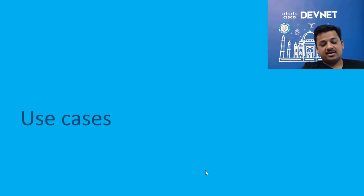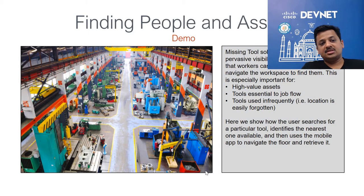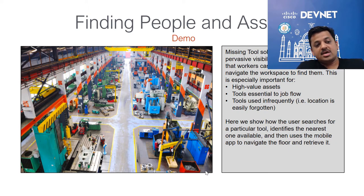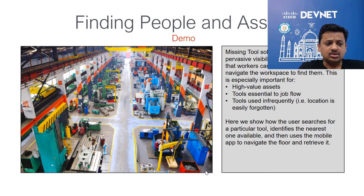Given that you now understand what location and proximity means, let's look at some of the use cases. The first use case is about finding people and assets. In a retail store, if you are trying to find experts who are carrying Wi-Fi enabled phones, or badges which are Bluetooth enabled, you are able to find where that person is on the shop floor. If you know that, you're able to communicate with them.